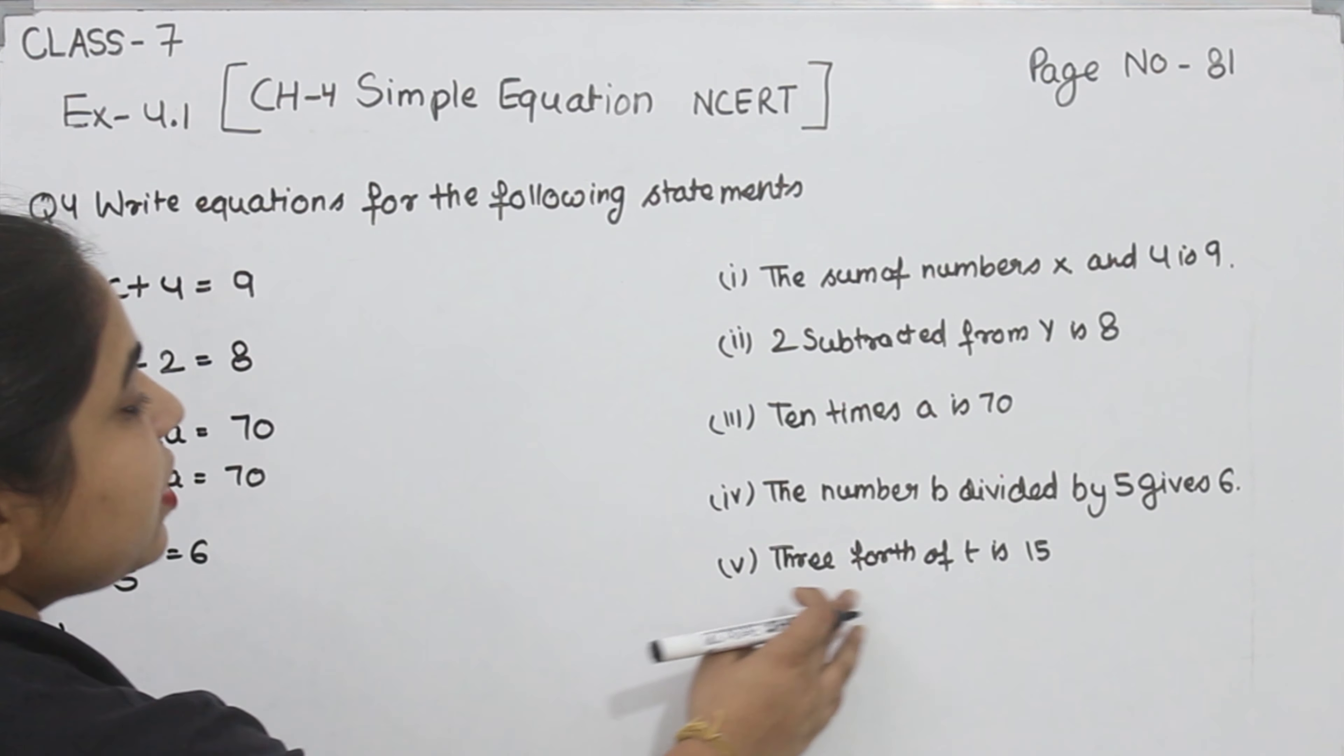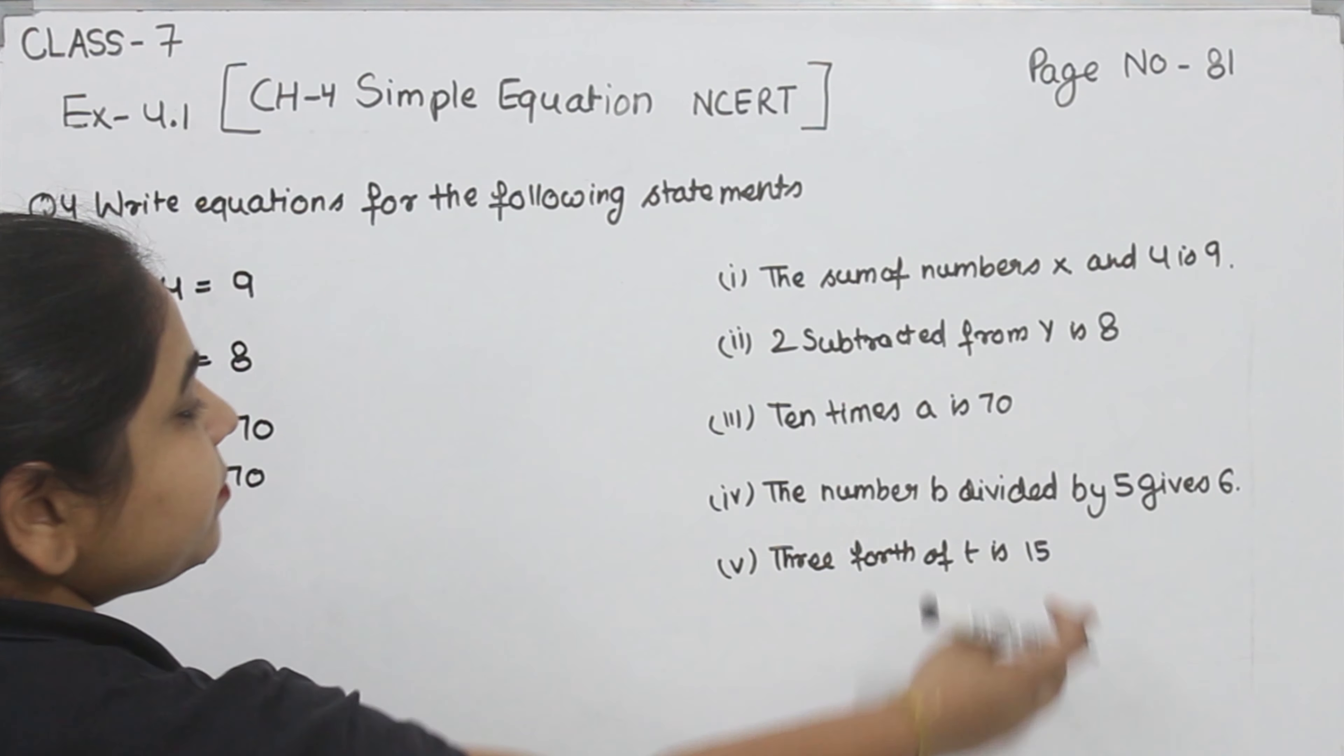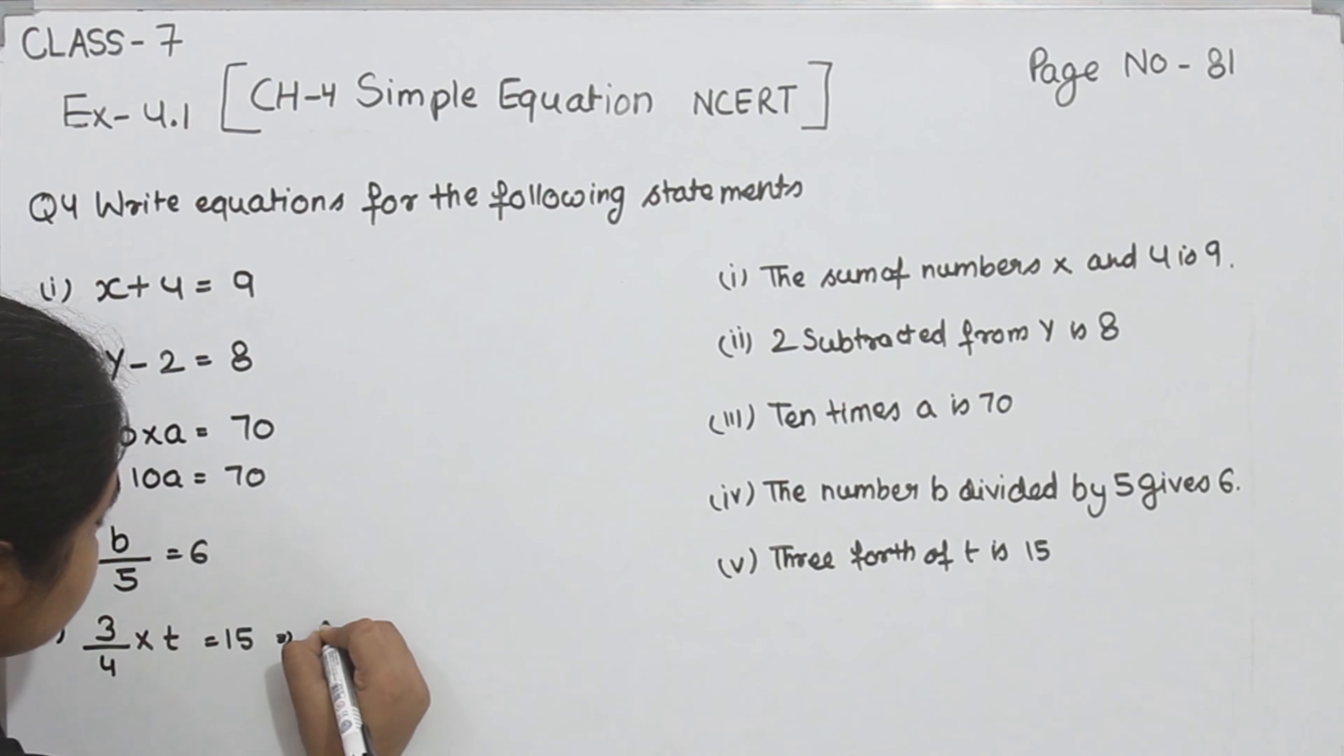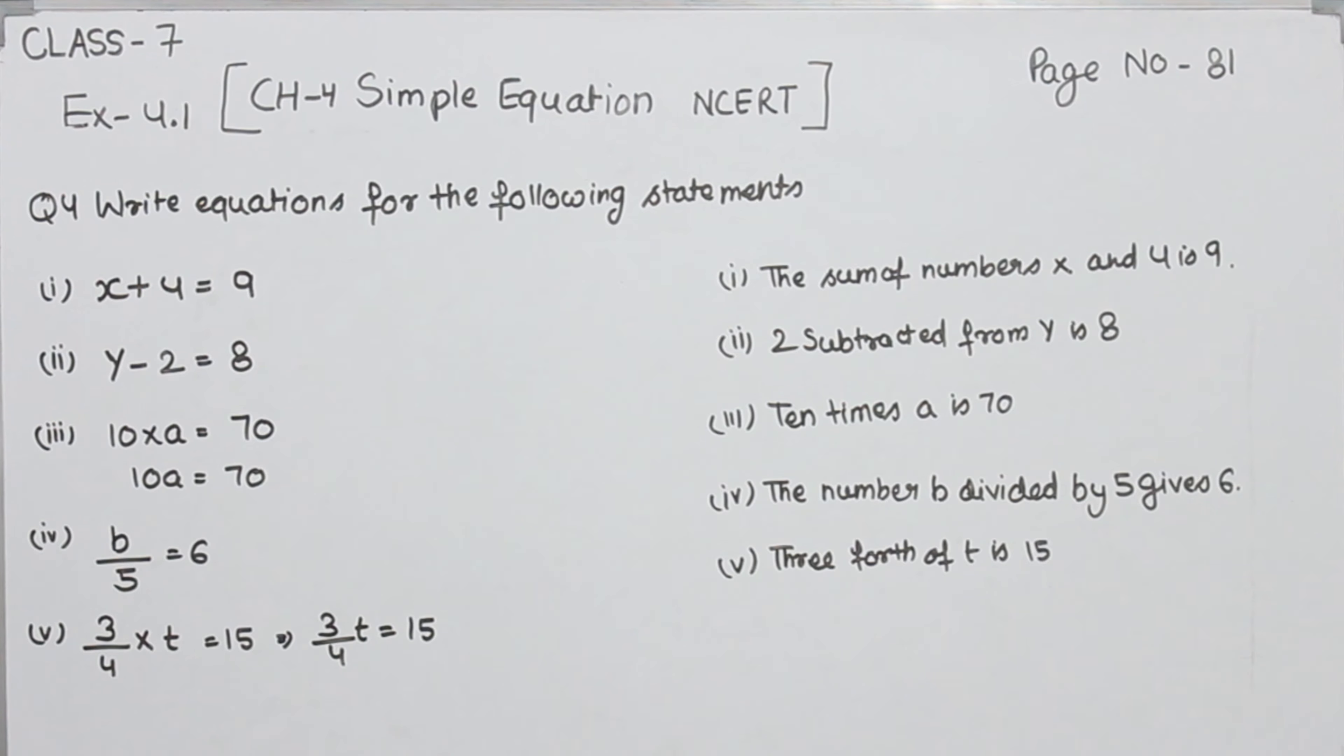Now part 5. Three-fourths of t is equal to 15. Now three-fourths of t is equal to 15, so we can write it as 3 by 4 t is equal to 15. This is part 5.